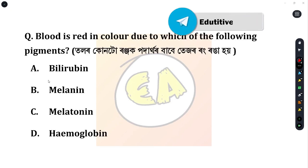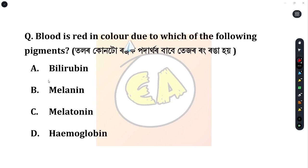Next question: blood is red in color due to which of the following pigments? Option A: bilirubin. Option B: melanin. Option C: melatonin. Option D: hemoglobin. The correct answer is hemoglobin.